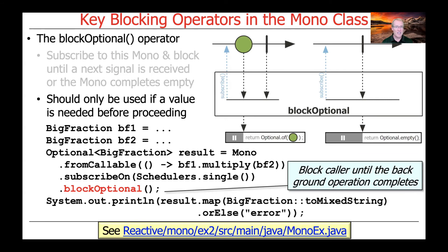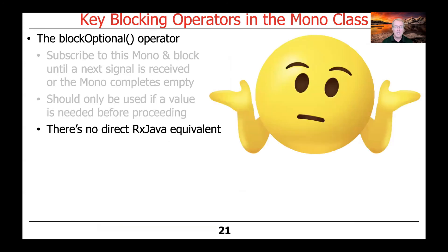We'll talk more about this example and others using block and timed block when we look at the case study at the end of this lesson. Interestingly, there is no direct equivalent in RxJava for blockOptional, which perhaps isn't too surprising because Project Reactor was built with Java 8 features in mind, like Optional, whereas RxJava was really targeted for earlier versions of Java where Optional didn't exist.